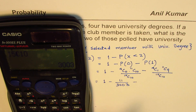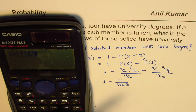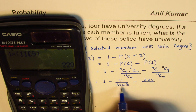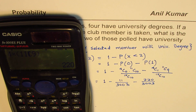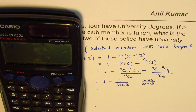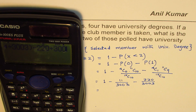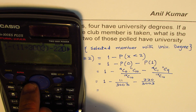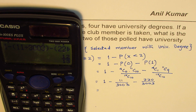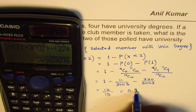Now we have the term 4C1, which equals 4. Then 4 times 11C9 — let's calculate 11C9, which equals 220. So that term is 4 times 220 equals 880, divided by 15C10, which we calculated as 3003. So we get: 1 minus 11 divided by 3003, then subtract 880 divided by 3003. This gives us 12 over 13 as our answer, which in decimals equals approximately 0.923.